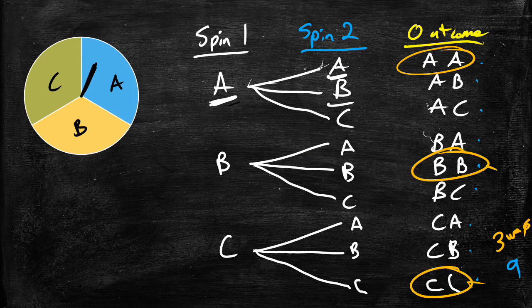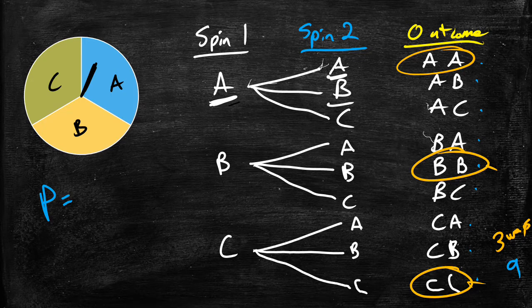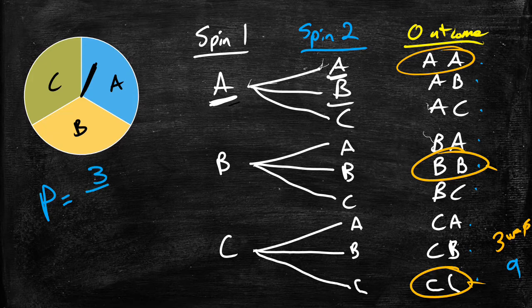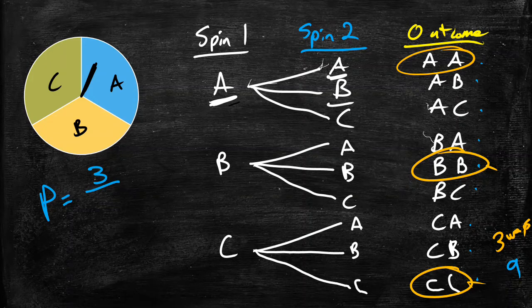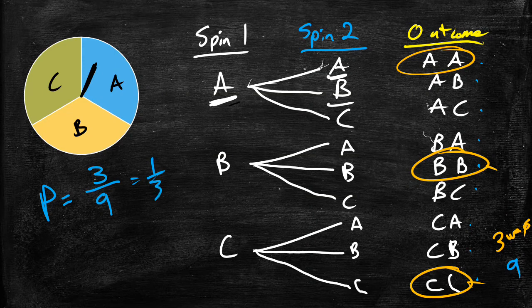And we know from our probability from the previous video, our probability is just equal to the favorable outcomes. In this case, outcomes that have the same letter. And we know that we have three of those. And we know the total outcomes is nine. So we can say that our probability is three over nine. We always want to put this into lowest terms. So we know that this would be one out of three.